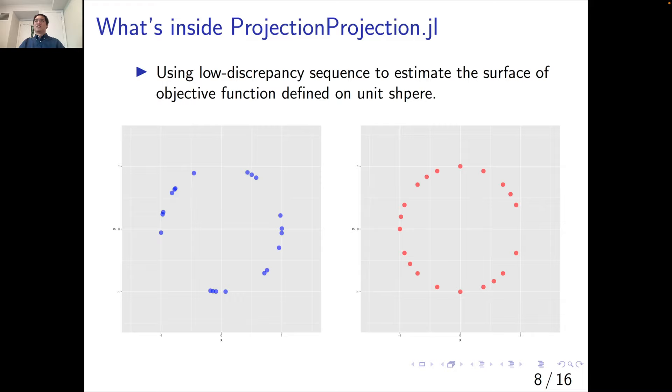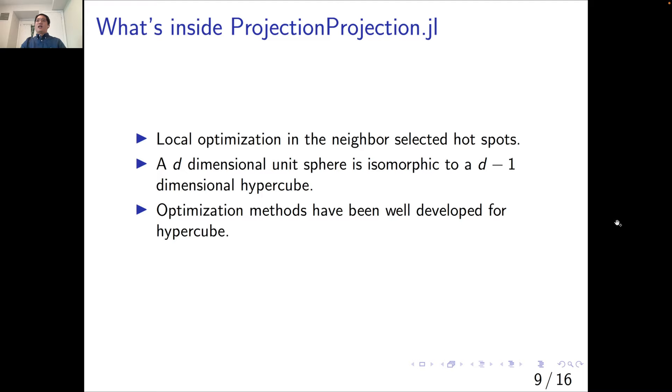On the left, we can see the random numbers generated using the default random number generator on a two-dimensional unit sphere, also known as a unit circle. On the right-hand side, we can compare with the low discrepancy sequence, which covers the space much more evenly and also still contains the randomness.